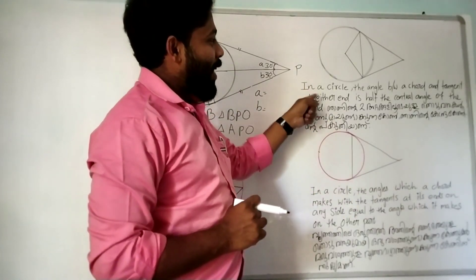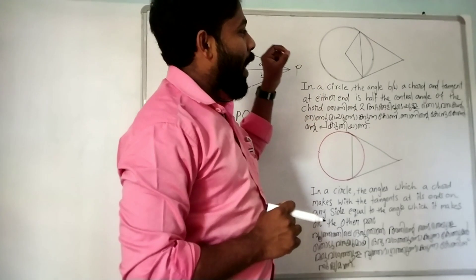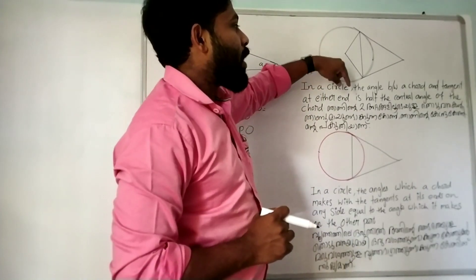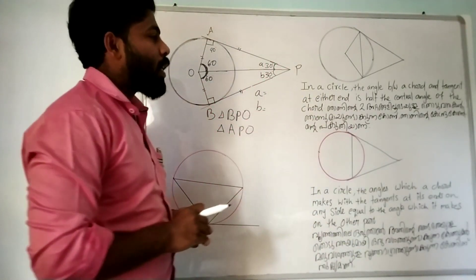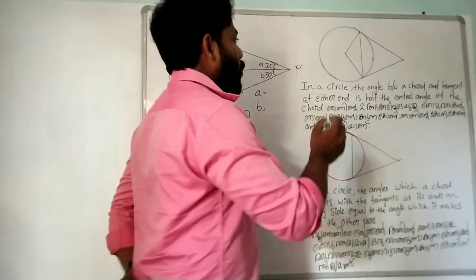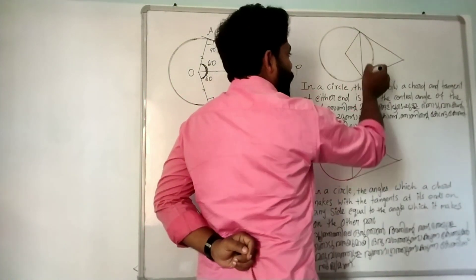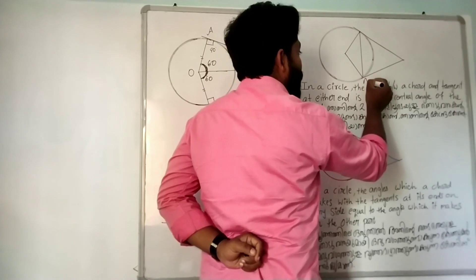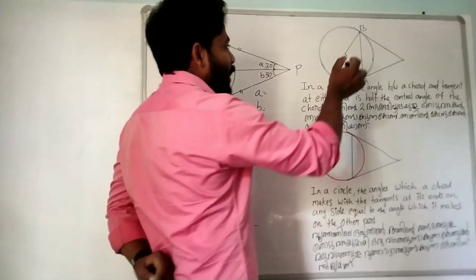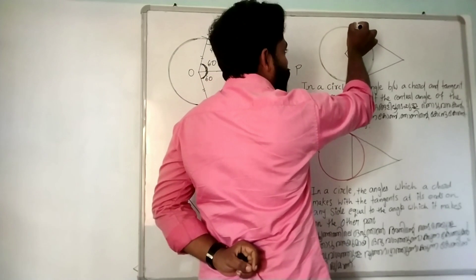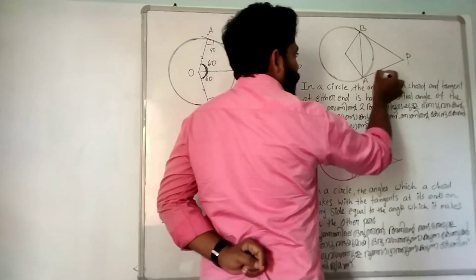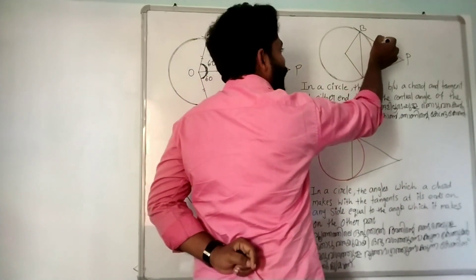In a circle, the angle between a chord and tangent at either end is half the central angle of the chord.